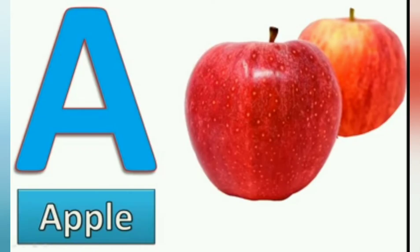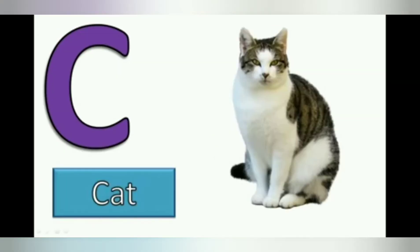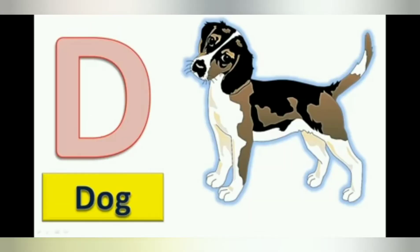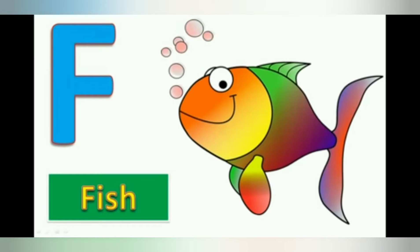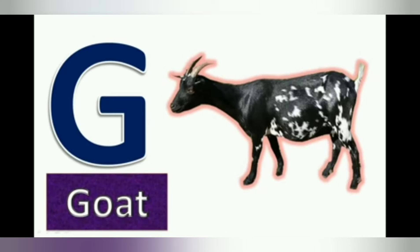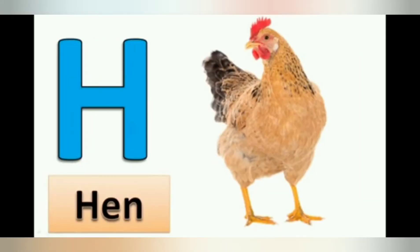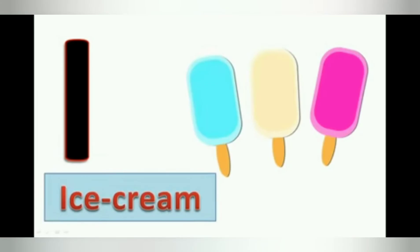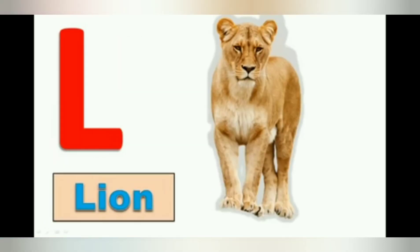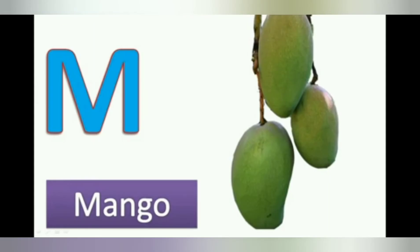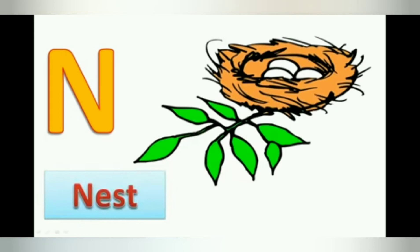Now let's revise. A, A for apple. B, B for ball. C, C for cat. D, D for dog. E, E for elephant. F, F for fish. G, G for goat. H, H for hen. I, I for ice cream. J, J for jug. K, K for kite.